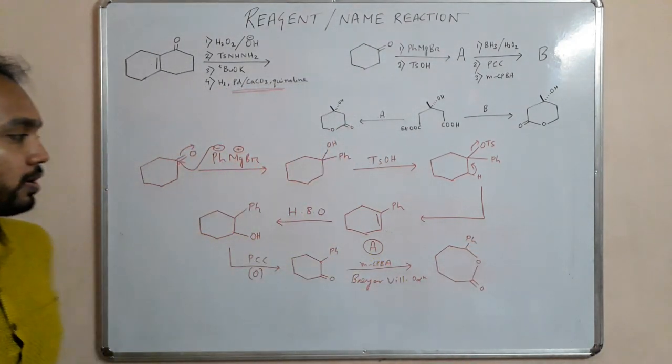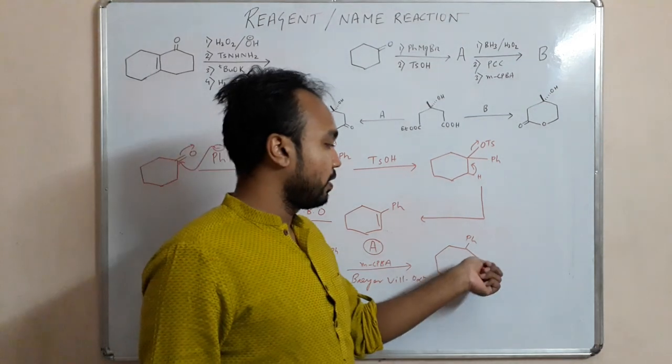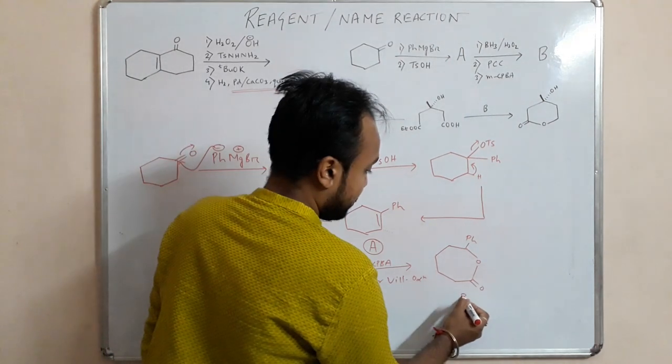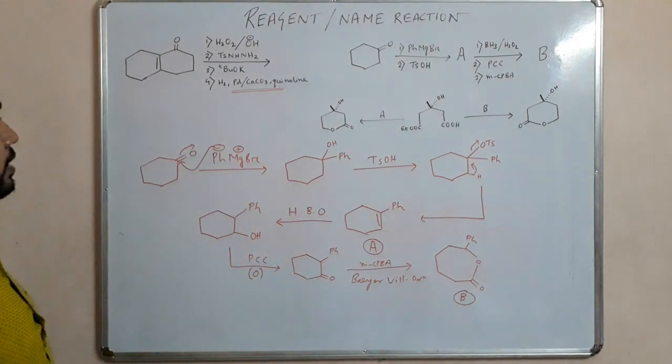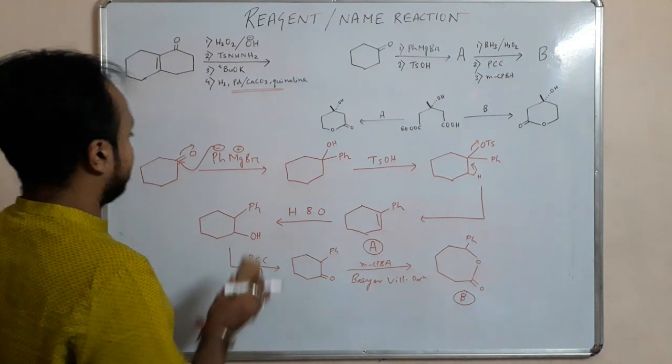So what will happen then? So this is the final product. This is the final product, it is a 7 member ring with a heteroatom. This is our B. And the next reaction, the next one is very simple based on the reduction and then cyclization.